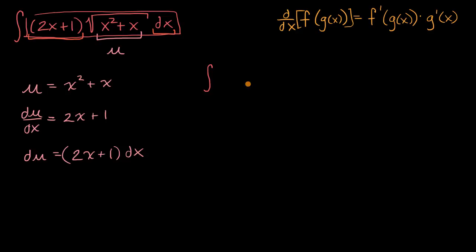You could say the integral of the square root of x squared plus x times two x plus one dx. And if you wanted to be really clear, you could even put all of those things in parentheses or something like that. And so here, this is our u and this right over here is our du.